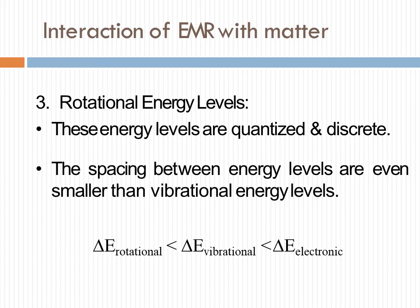The third is rotational energy levels. These energy levels are quantized, and the spacing between them is even smaller than vibrational energy levels. So, energy levels ki agar baat karein — teen prakar ke hain: electronic, vibrational, and rotational. Electronic has the highest energy, then vibrational, and the lowest is rotational. From the table, going left to right, energy increases from rotational to vibrational to electronic. In this chapter we discussed the definition of spectroscopy, electromagnetic radiation and its classification, the principle of spectroscopy, and the interaction of EMR with matter.